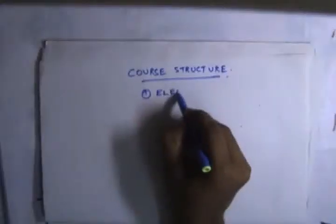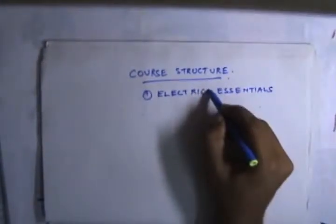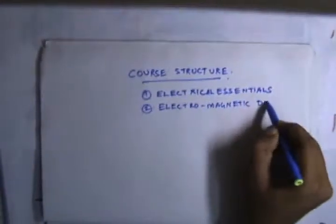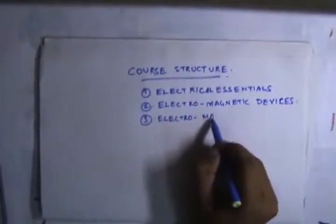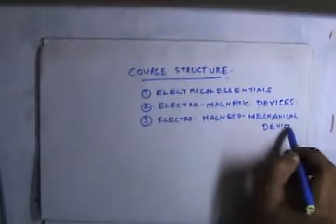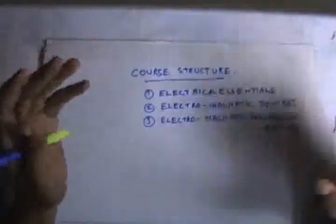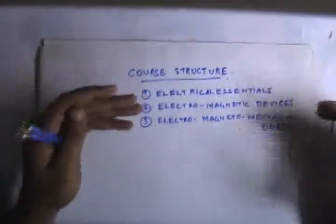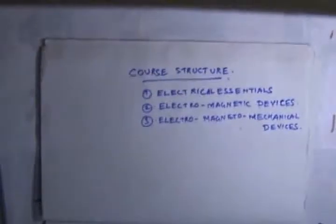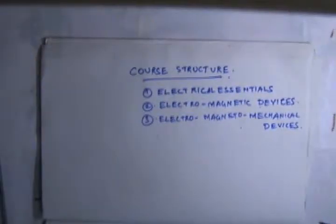Now we are going to discuss the course structure. The course structure is divided into three parts: Electrical Essentials, Electromagnetic Devices, and Electromagnetomechanical Devices. The course is divided into these three parts, and I would appreciate if you make a note of these for future references.